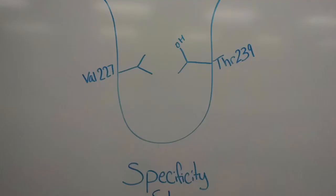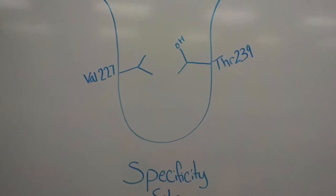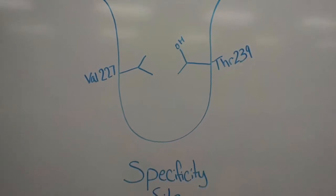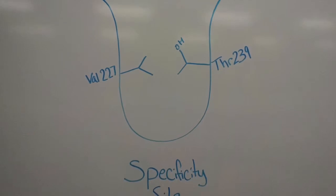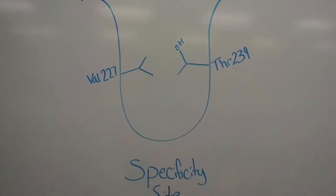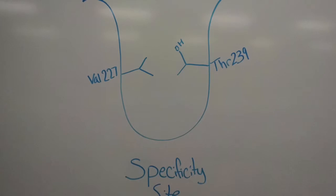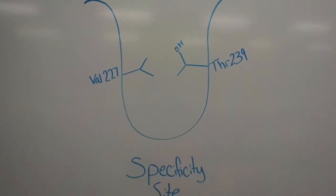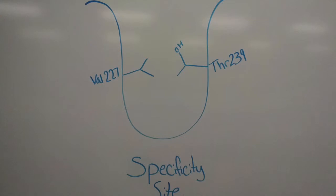The specificity site consists of valine-227 and threonine-239. These residues make the site rather narrow, allowing only small hydrophobic residues, such as alanine, into the specificity site. The narrow property of the specificity site is important.